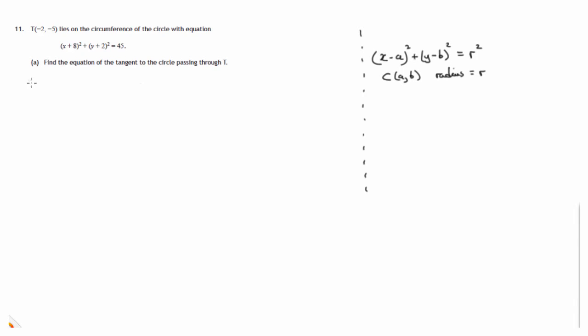So in this case, the center is, let's call it C, (-8, -2). Another way of thinking about this is it's the value of x that makes the term x+8 equal to 0, and the value of y that makes the y+2 term equal to 0.